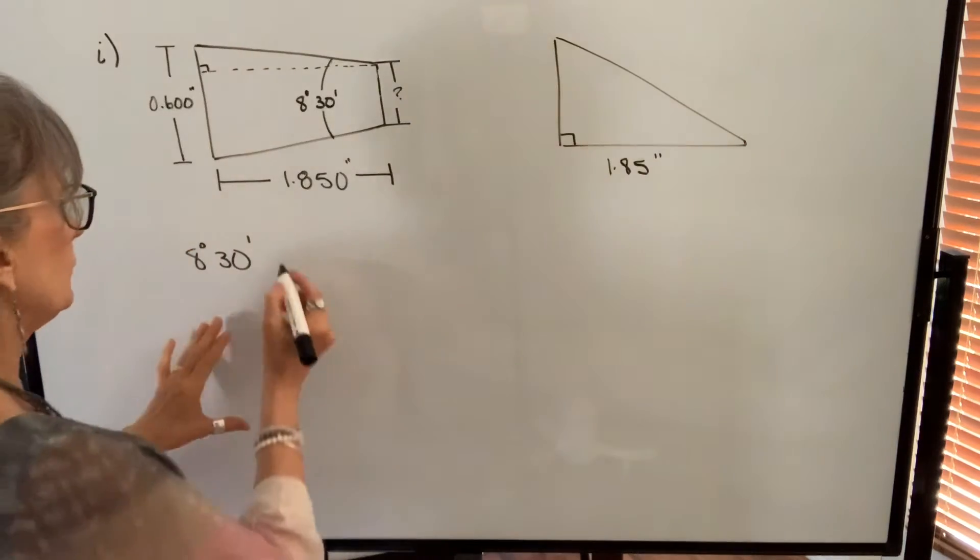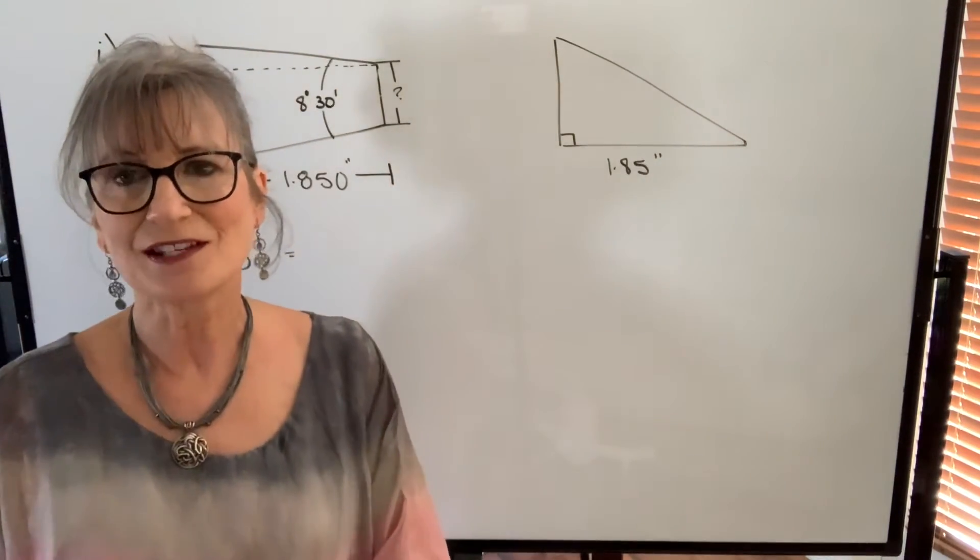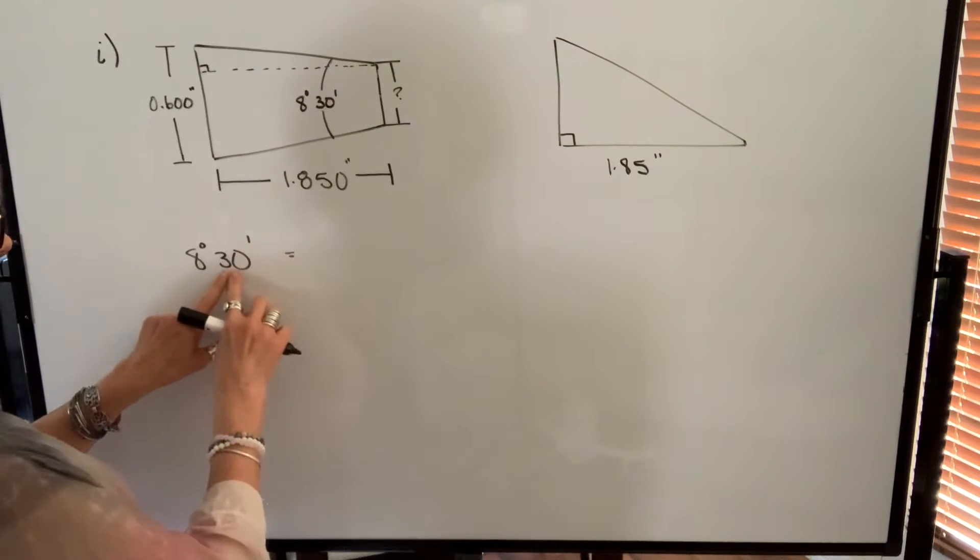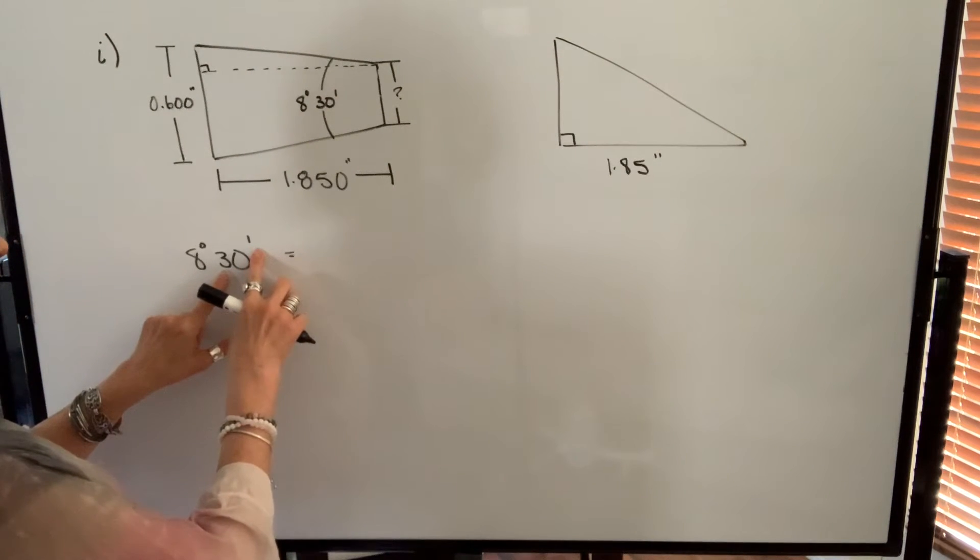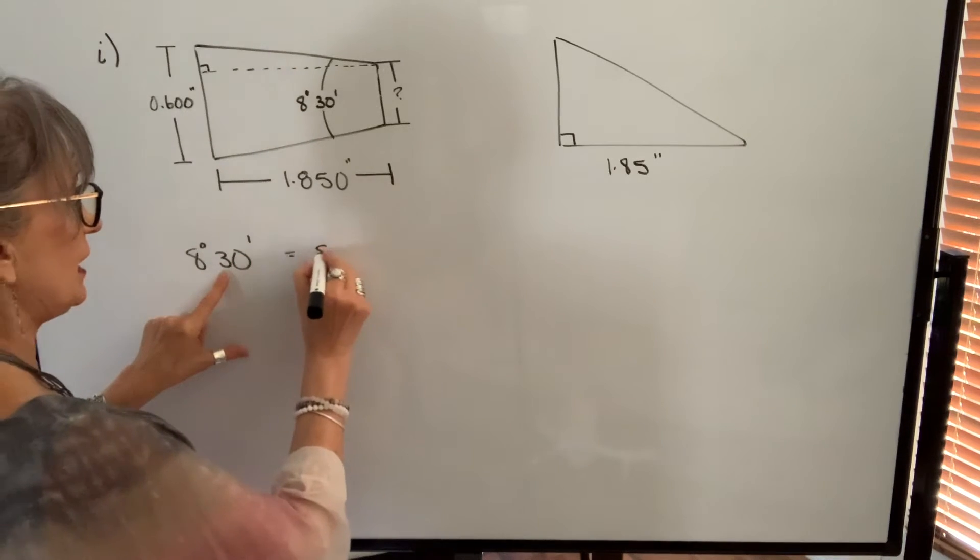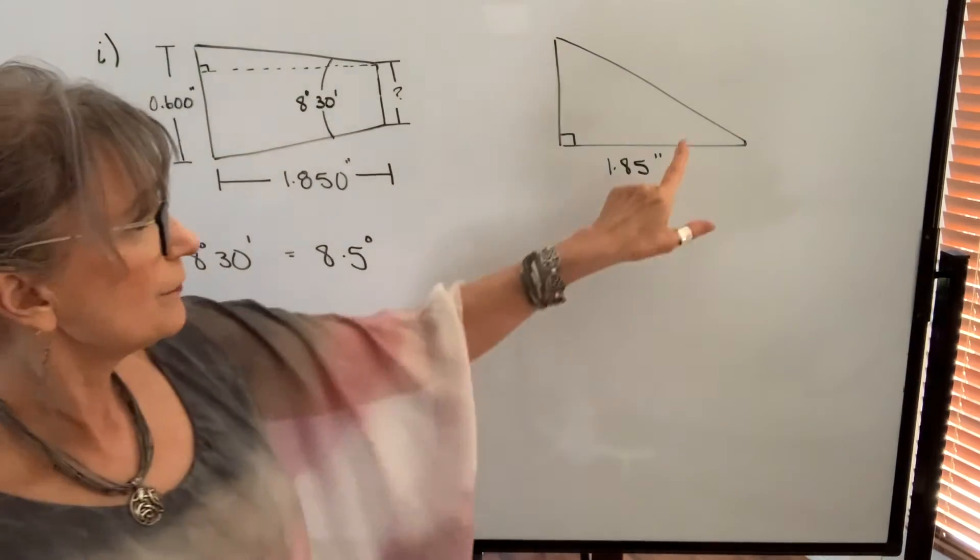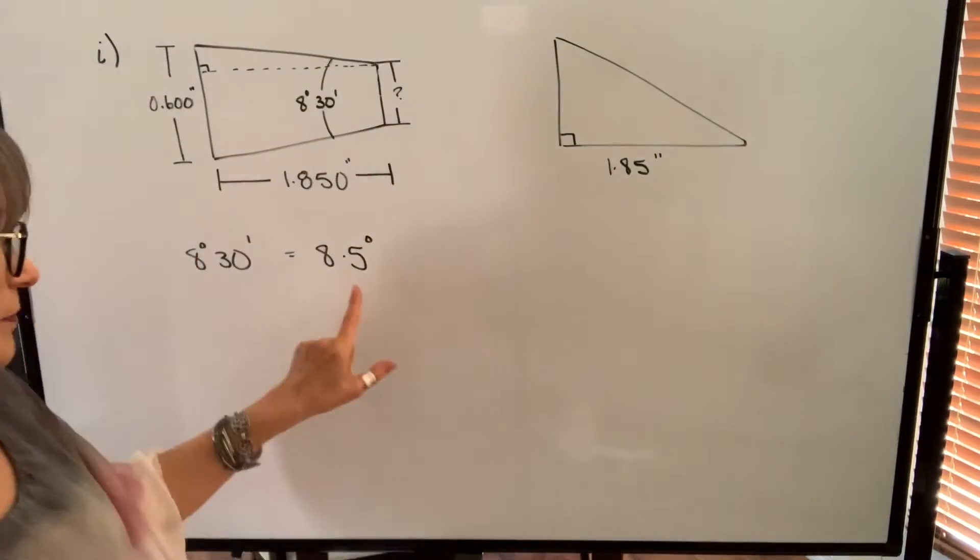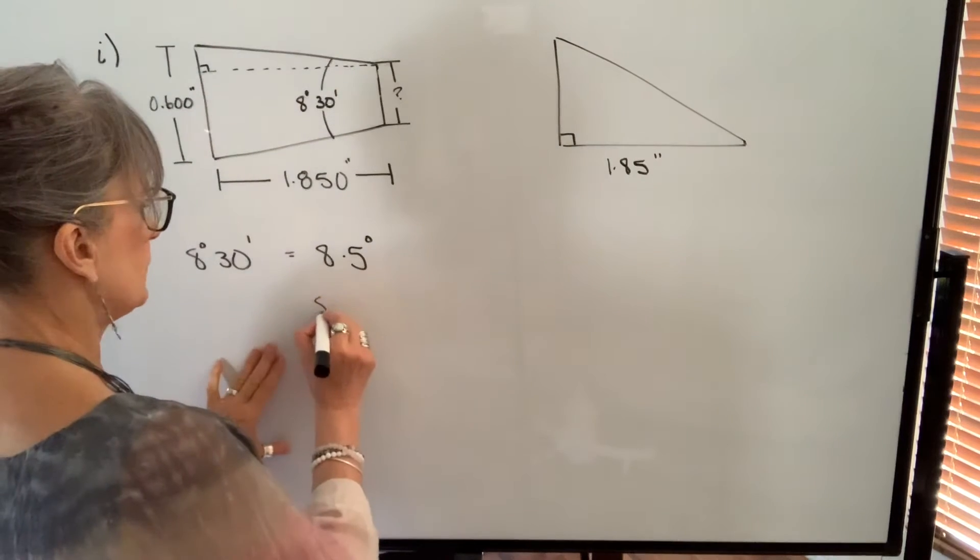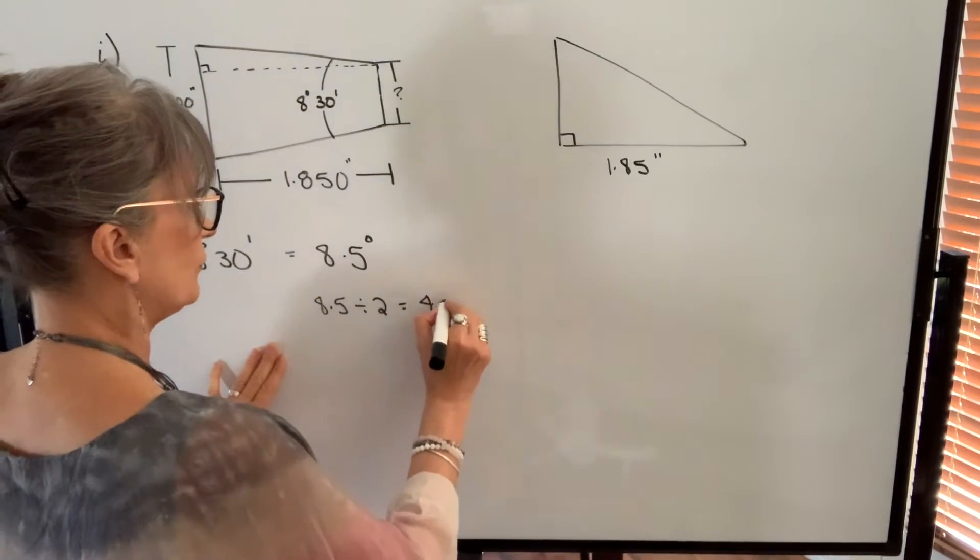So in order to do that I can either use the function on my calculator that changes degrees minutes seconds to decimal degrees. But basically we're going to take 30 minutes and divide by 60. That's going to be 0.5 degrees. Add it to this. This will be 8.5 degrees. In order to find this angle I'm going to divide this by 2. So 8.5 degrees divided by 2 will equal 4.25 degrees.